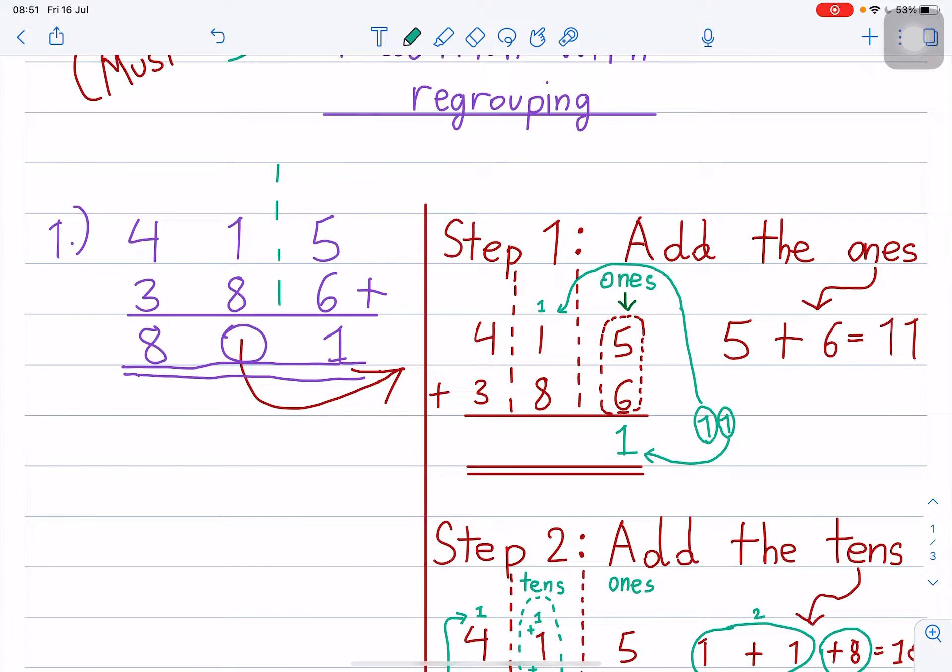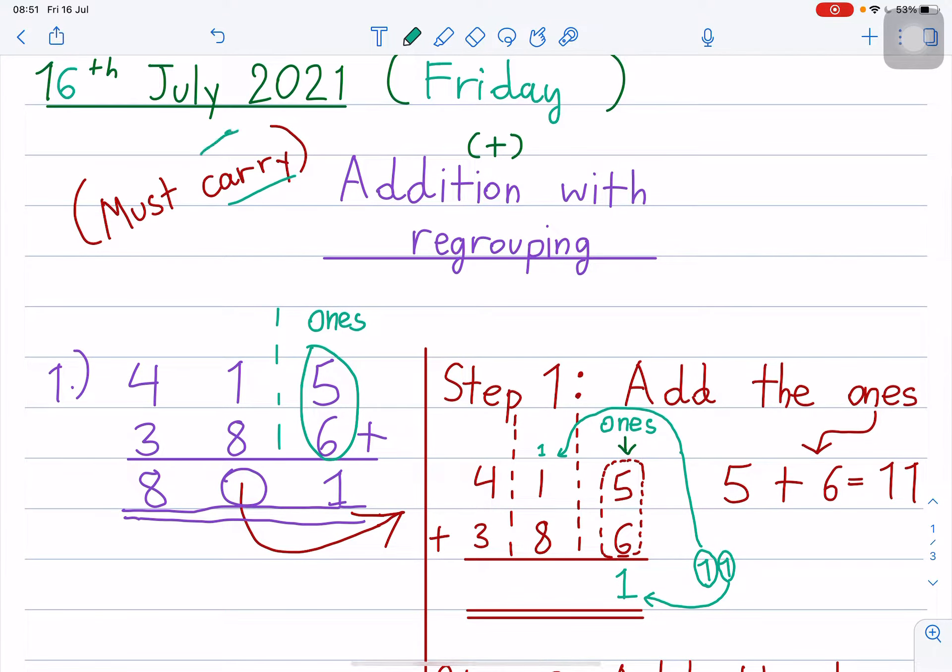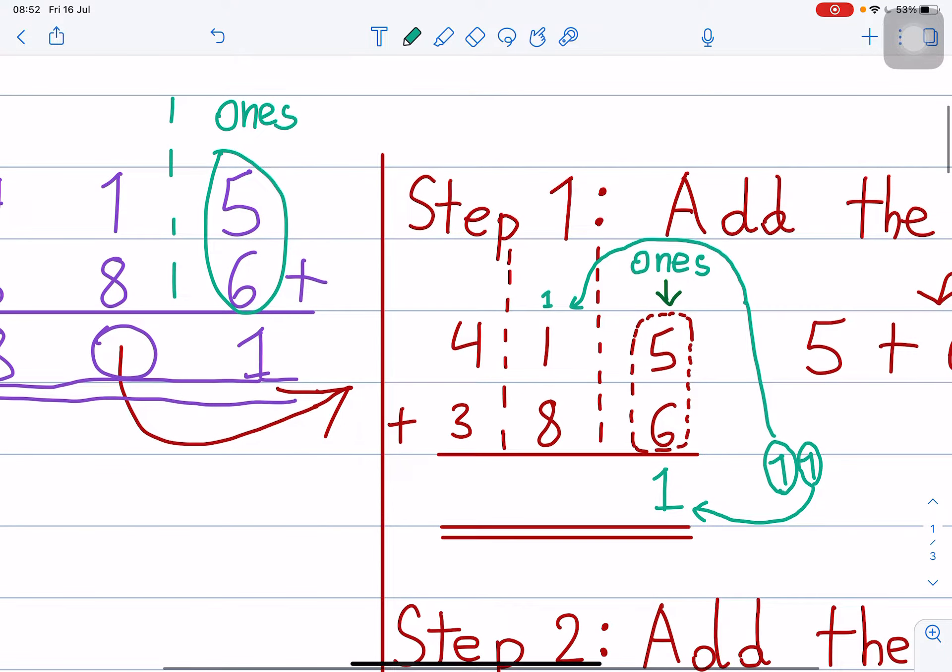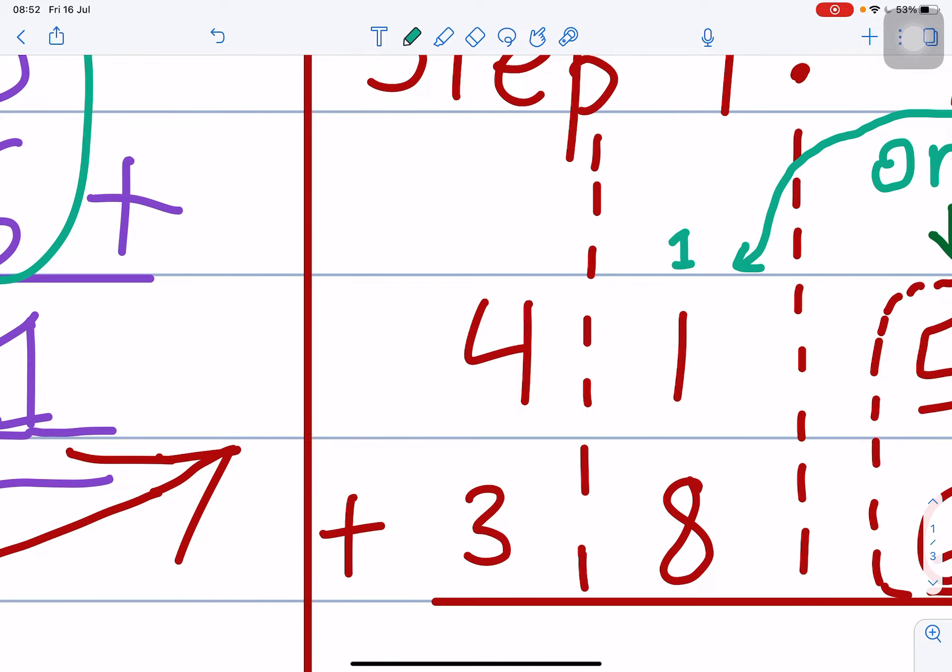Well, step one: add the ones. You see 5 plus 6 equals 11. So 11 means 1, 1, meaning you must carry here. 5 plus 6 equals 11. Number one goes here, another number one you must carry and put over here. Do you understand?